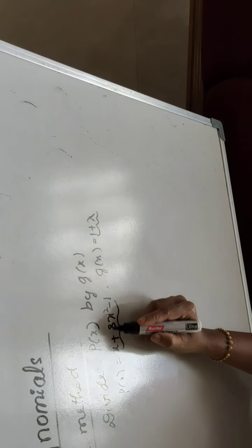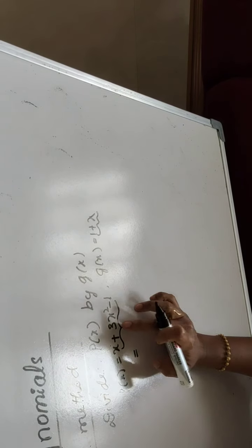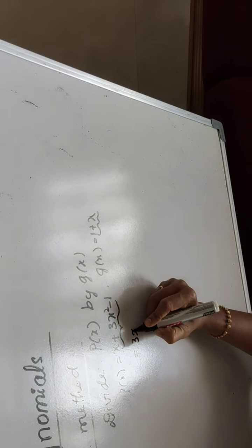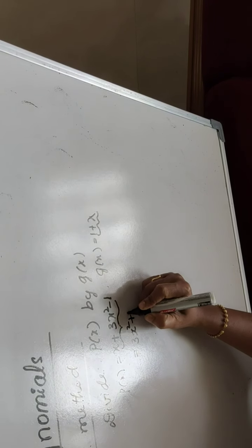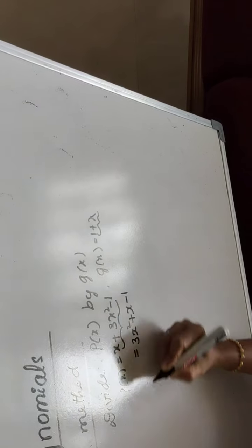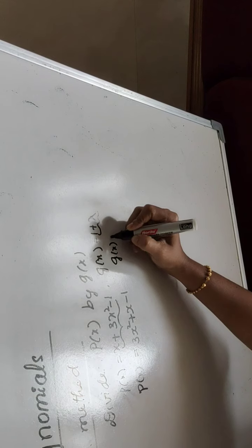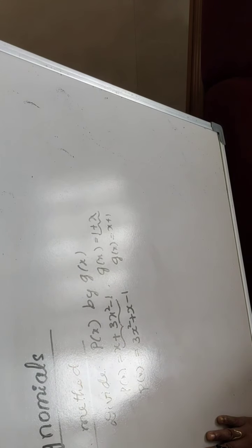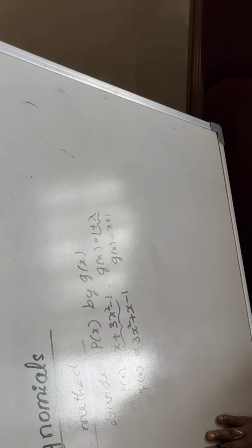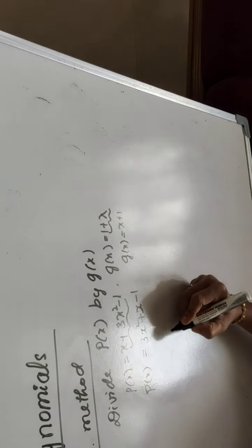Right now the terms are not in order — power 1 comes before power 2. So write them in proper order with the correct signs: 3x squared first, then plus x, then minus 1. That is p of x. For g of x, 1 plus x becomes x plus 1. Arrange like this, but do not change any original signs while rearranging.